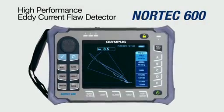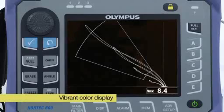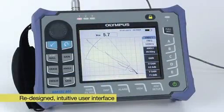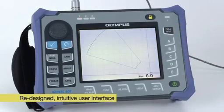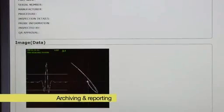The Nortec 600 is a rugged, field-ready instrument that features a vibrant display to accommodate any lighting condition. It has a completely redesigned user interface that is very intuitive for any level of user. It also offers a complete archiving and reporting solution.